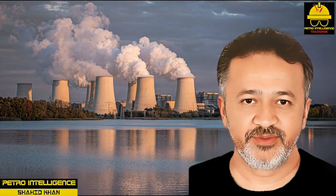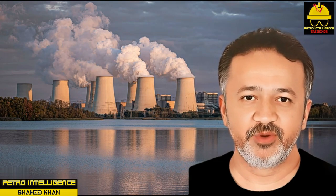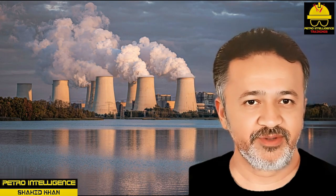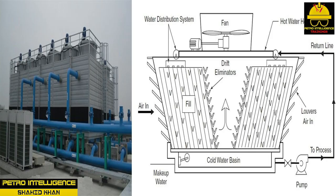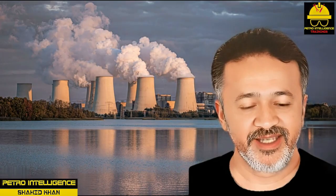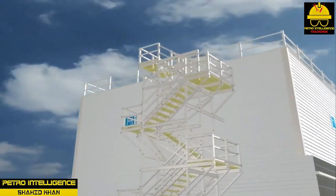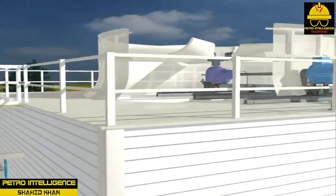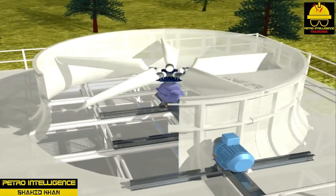Induced draft cooling tower: an induced draft tower is a type of cooling tower that produces airflow mechanically. It differs from the force draft cooling tower in that it pulls air out of the tower rather than forcing it in. Airflow in an induced draft tower is slower than in a force draft tower, but heat transfer through evaporation is more efficient.